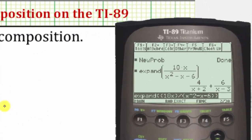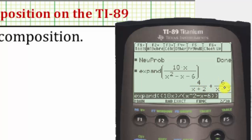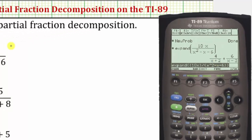Notice the given fraction is equal to four divided by the quantity x plus two, plus six divided by the quantity x minus three. This is the partial fraction decomposition of the given fraction. Let's go ahead and write this down.